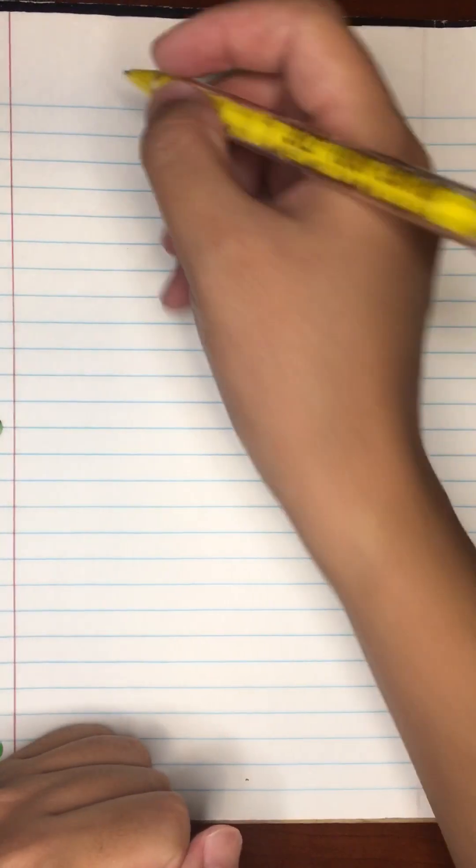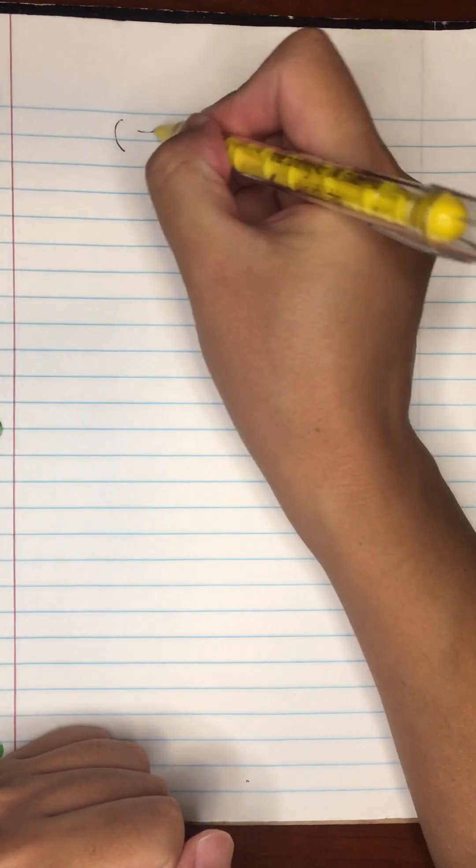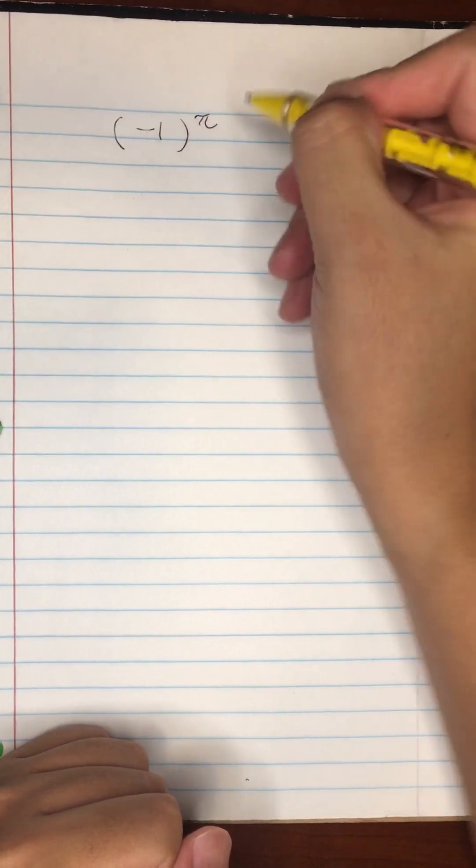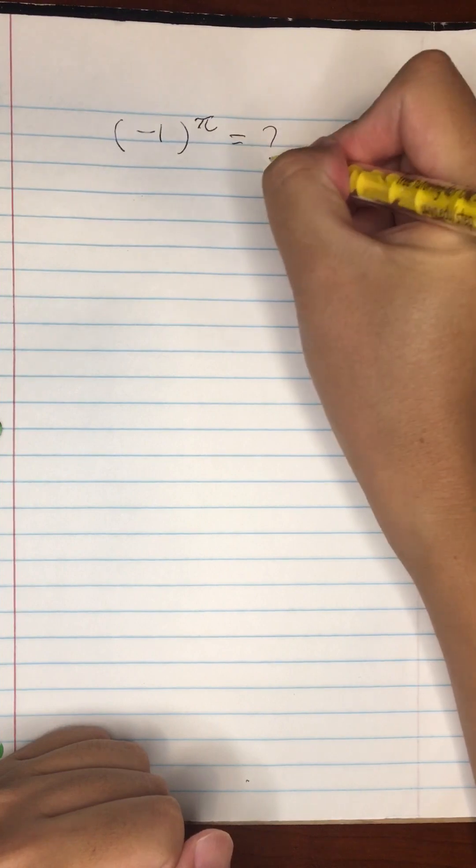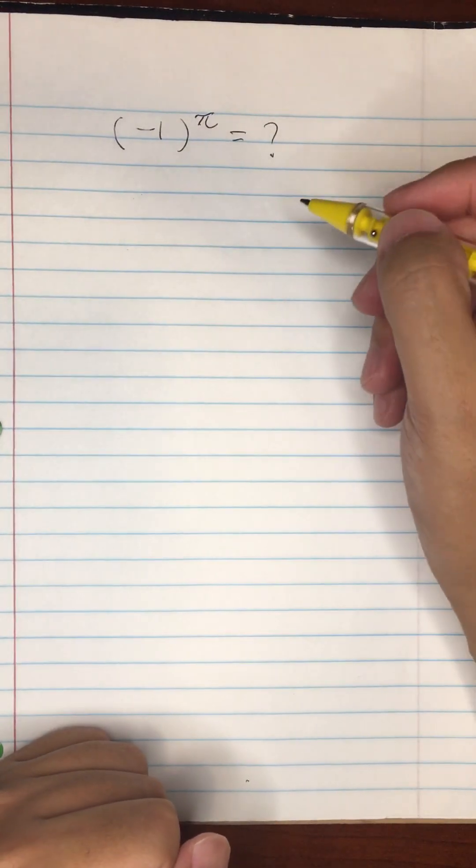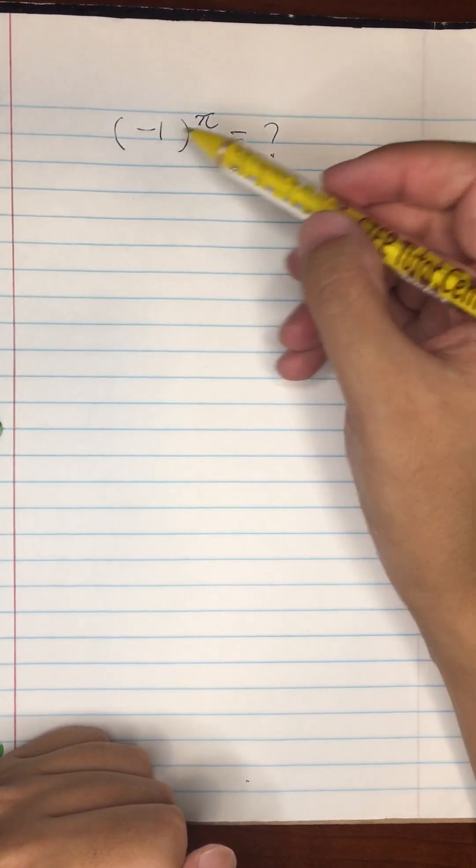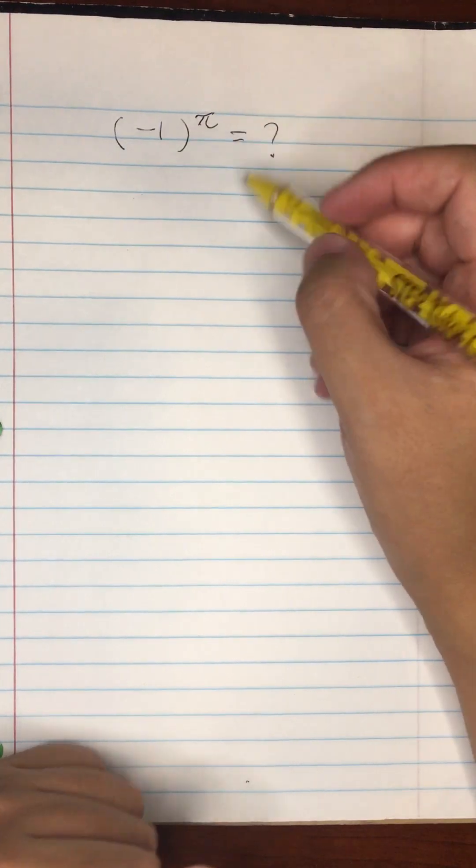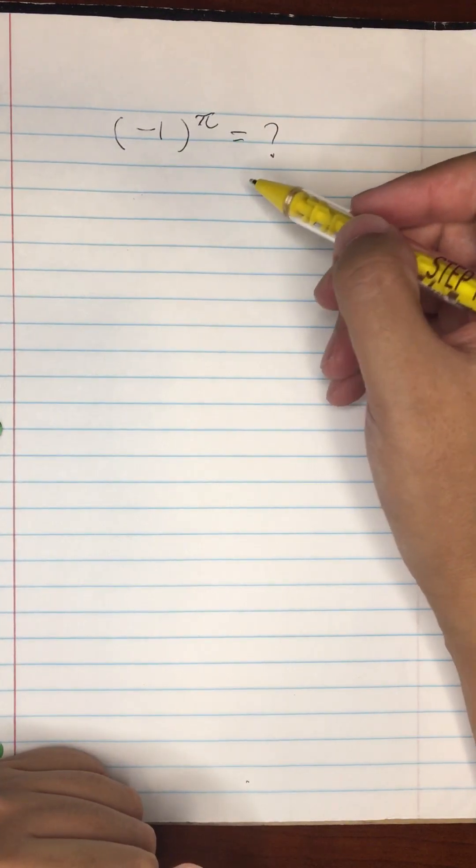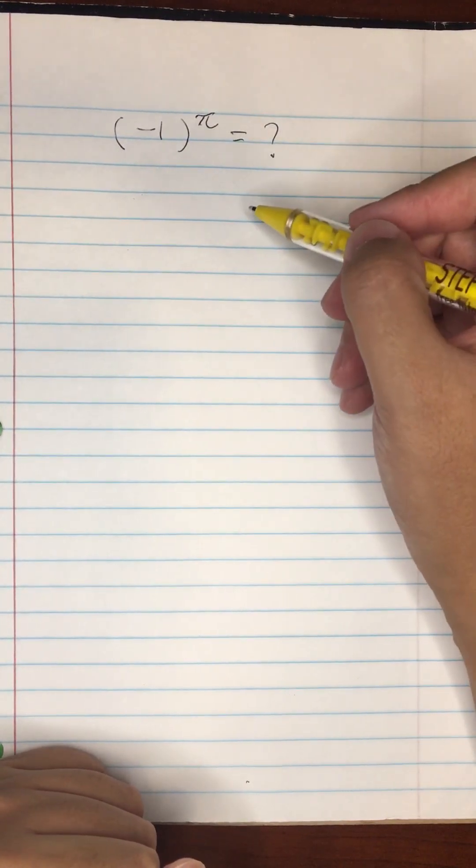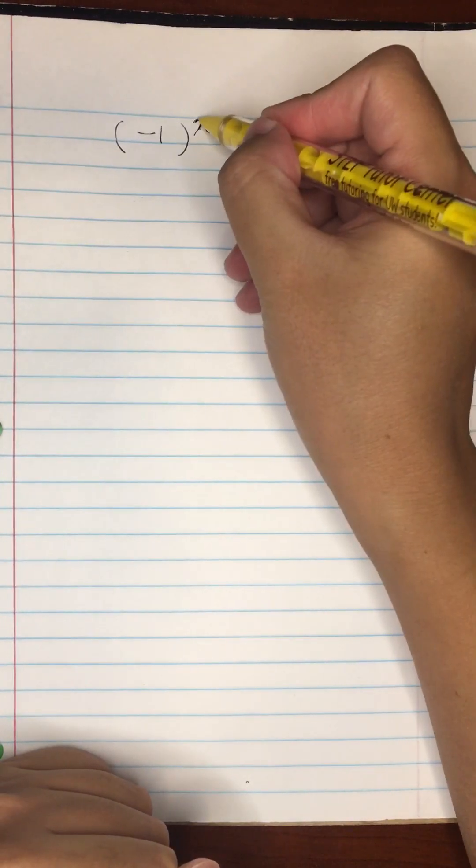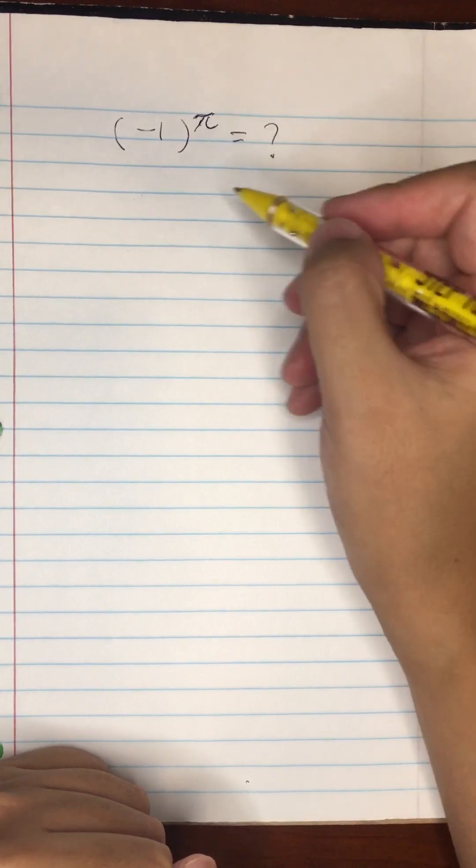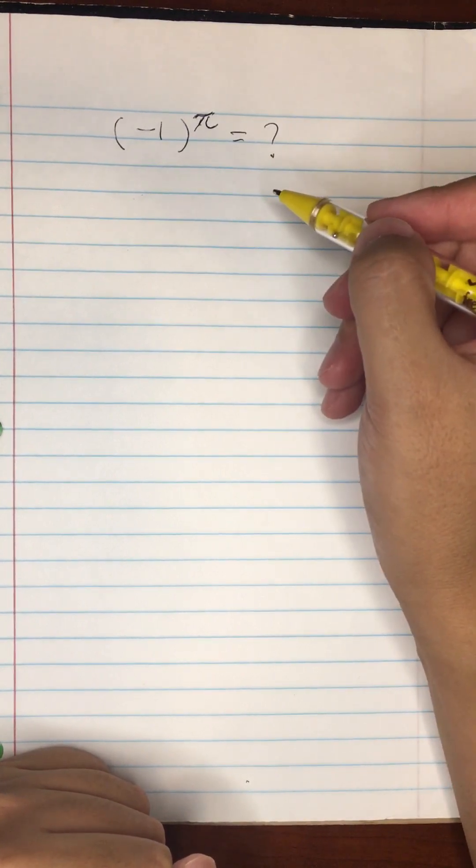So now let's evaluate minus one to the pi's power. What is this value? How do we compute it? Of course you can stick this expression into Wolfram Alpha or MATLAB or Mathematica, whatever software you're using, and then get a number out of it. But exactly how are the software actually computing this expression?